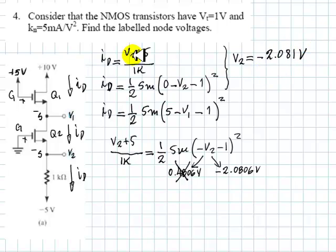With that voltage and this equation we can find what is the current, all through the circuit, minus 2.081 plus 5 divided 1 kilo. And that current then we can equate to this expression and solve for V1. That is 2.919 milliamps, the current there.